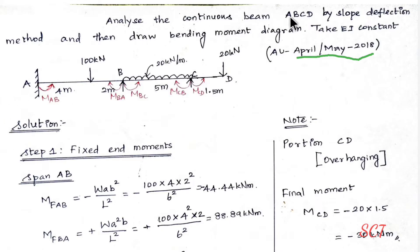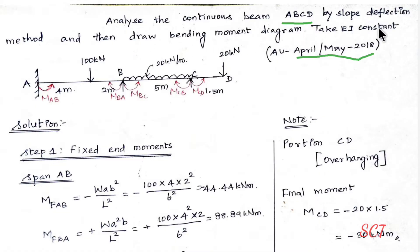Analyze the continuous beam ABCD by the slope deflection method. We will see the slope deflection method, then draw the bending moment diagram. Take EI as constant.